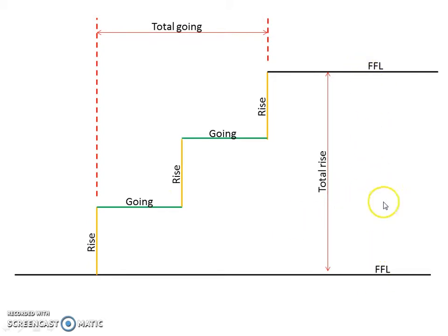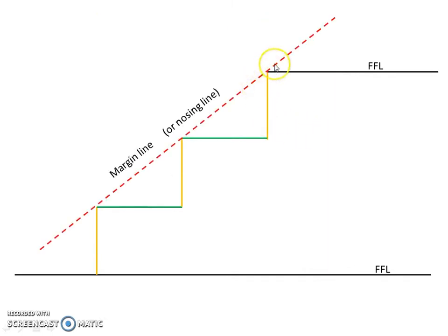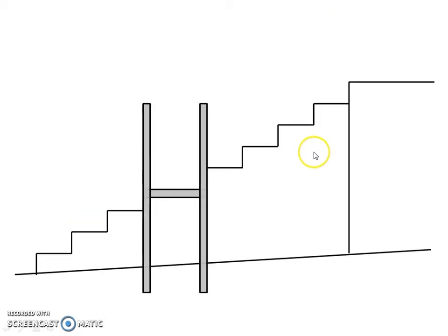We've got our finished floor levels, our individual rises, our total rise, our individual goings and our total going. If you haven't run through that yet, please open up the first video and have a look. There's the other line we spoke about in the first video — our margin line, which touches the front edge of all of our treads and landings. Here is an example that we're going to be working with today.